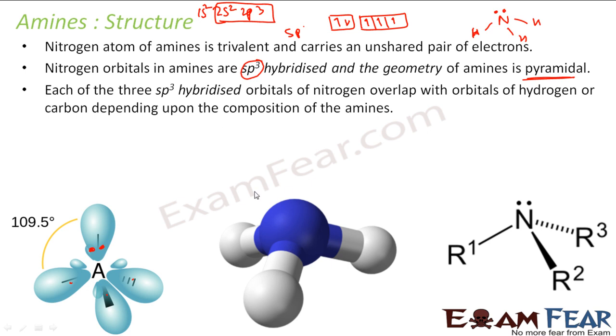Now if you see each of these three sp3 hybridized orbitals of this nitrogen, they overlap with hydrogen or carbon. So this can be hydrogen or this can be carbon. Or any alkyl groups, it will have some carbon. For example, this also can be a carbon with a benzene ring. So this thing can be a hydrogen or carbon, depending on what kind of amine you have.